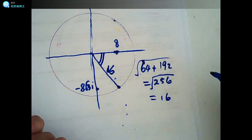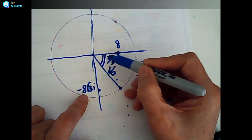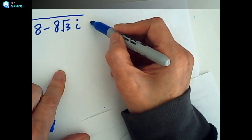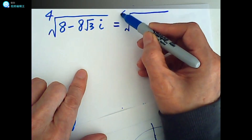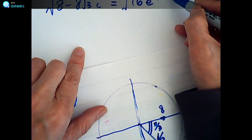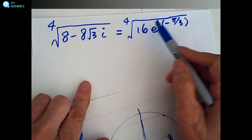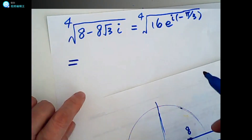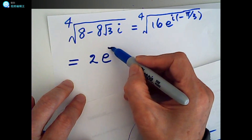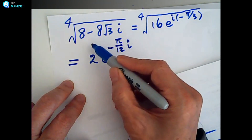Since this is 8 root 3 and this is 8, the angle is equal to negative pi over 3. So this complex number in exponential form is 16 e to the i times negative pi over 3. Taking the fourth root, the modulus becomes 2 and the exponent becomes negative pi over 12 i.